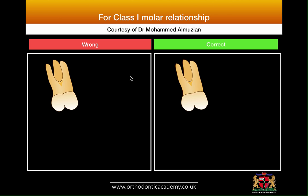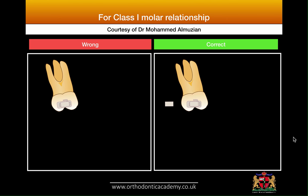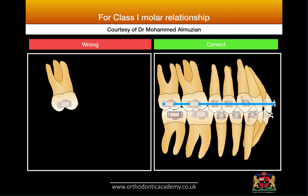In order to achieve a Class 1 molar relationship, we have to place the molar tubes in a way that we can see more of the distobuccal cusp than the mesiobuccal cusp. If we place it correctly — not parallel to the occlusal plane — when you put the wire, you will get an Andrews Class 1: the mesiobuccal cusp occludes in the mesiobuccal groove of lower six, and the distobuccal cusp of upper six occludes in the embrasure, giving a very nice Andrews Class 1 molar relationship.